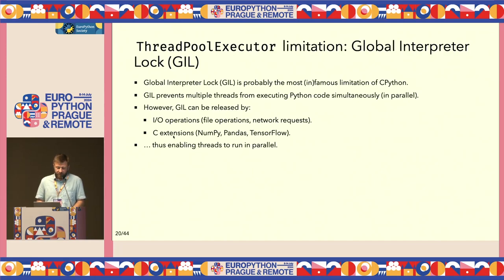One limitation for ThreadPool — famously or infamously known — is the Global Interpreter Lock, or GIL. In future Python versions, this may not be a limitation anymore, but it still is. However, the GIL can be released either by IO operations — so especially for IO, ThreadPoolExecutor is good — or with extensions like NumPy, Pandas, and TensorFlow that are implemented in C, which also release the GIL. So if you have NumPy in threads, they can run efficiently in parallel.